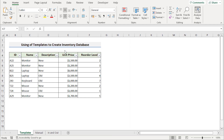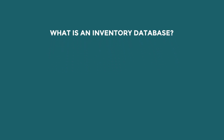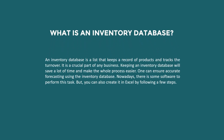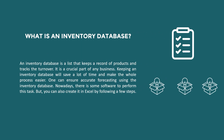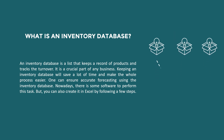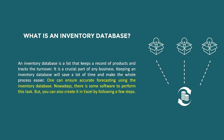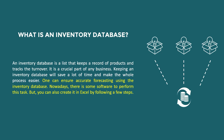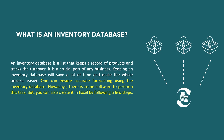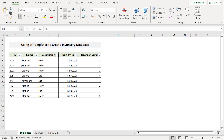So the first question occurs: what is an inventory database? An inventory database is a list that keeps a record of products and tracks the turnover. One can easily ensure accurate forecasting by using this kind of database. Before going into the methods, let's talk about the database we want to create here.